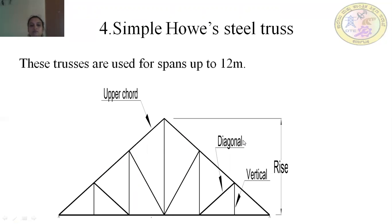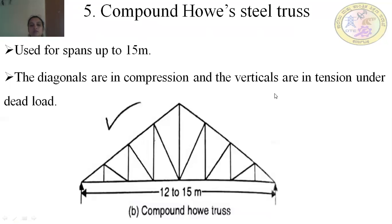The compound hose steel truss is used for spans up to 15 meters. In this truss, the diagonal members are in compression and the vertical members are in tension under dead load.